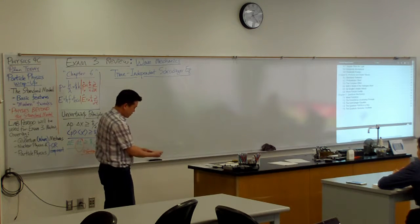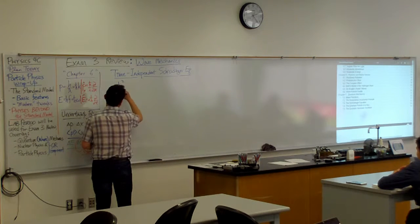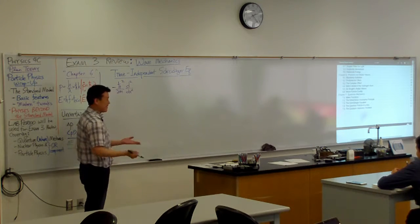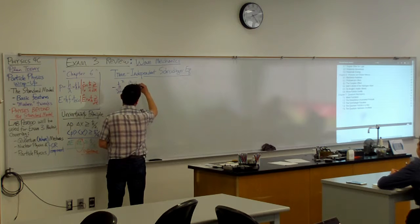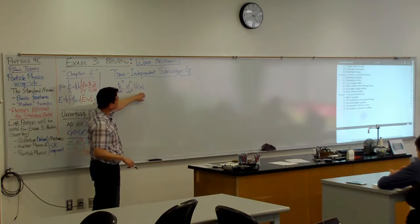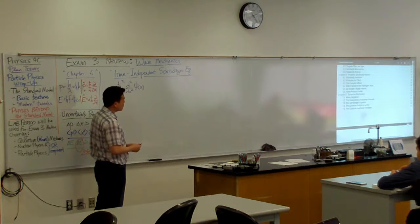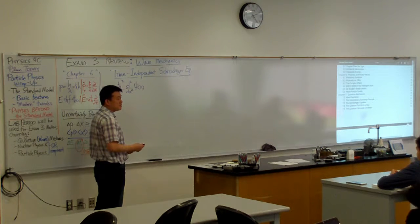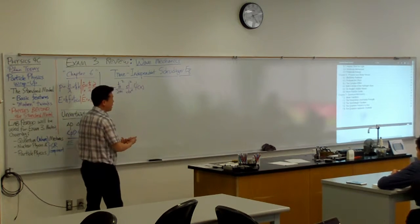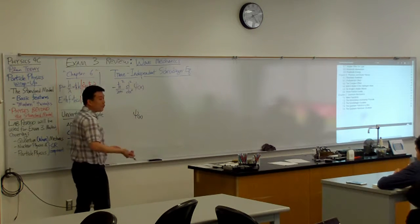The time-independent Schrödinger equation looks like this: minus h-bar squared over 2m, times the double position derivative — ordinary derivatives, not partial, because that's the whole point of the time-independent version — of the wave function, the position portion only. I've mentioned how the time dependence for a stationary state goes: the full wave function as a function of position and time is the position wave function times e to the minus i, E over h-bar, t.